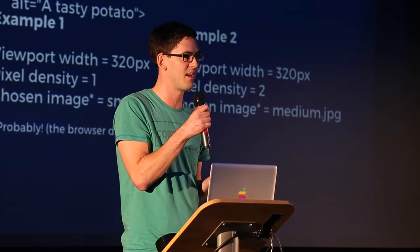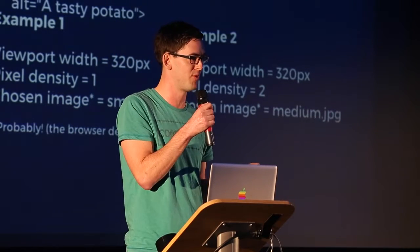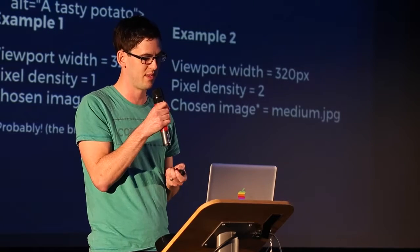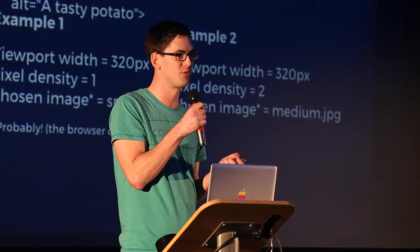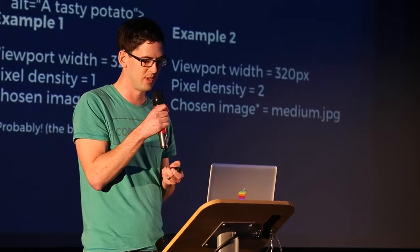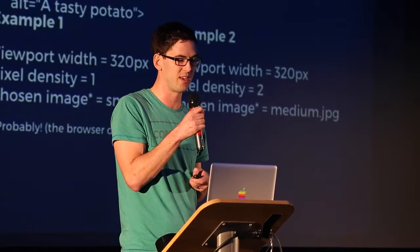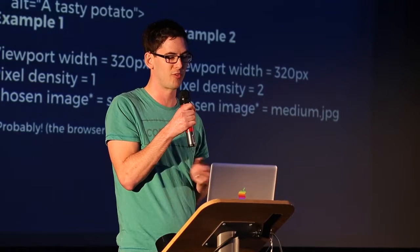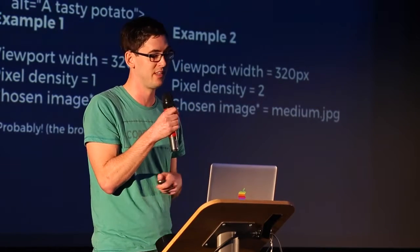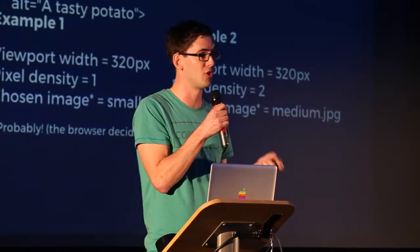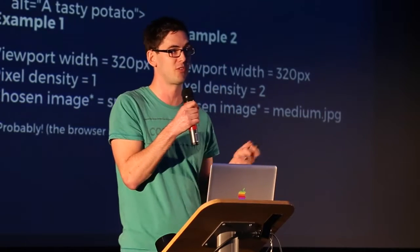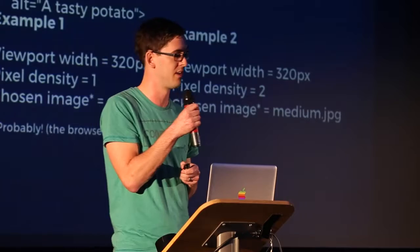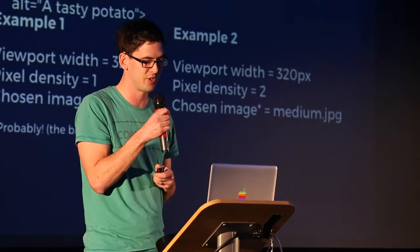In example one, say I have a smartphone — 320 CSS pixels in width. It's a slightly older phone with a pixel density of one. The browser says: I've got 320 pixels, pixel density of one, 320 times one is 320. So it's going to look for the image closest to 320 pixels in width, and it will choose small.jpg. In example two, I've got the same size phone, but a newer version — say it's a retina display with a pixel density of two. The browser multiplies 320 by two, gets 640, and will hopefully choose medium.jpg.